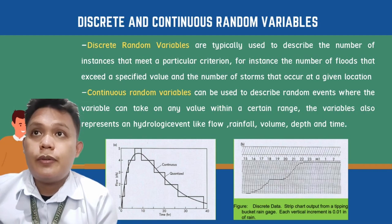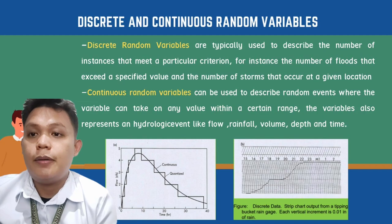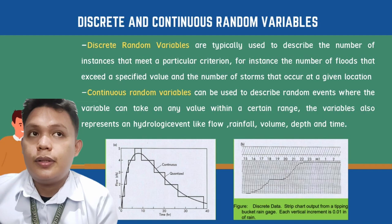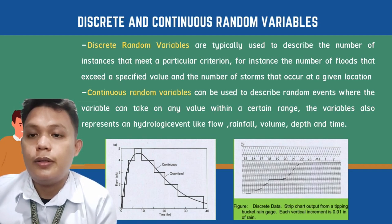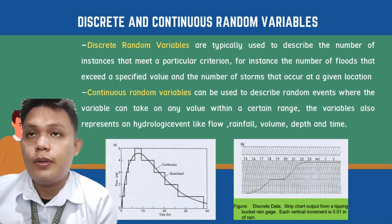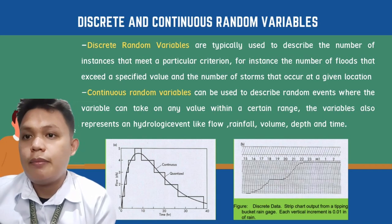The difference between discrete and continuous random variables: discrete variables count things in a collection, like how many students are in a classroom or how many planets are in the solar system. Continuous random variables are measurable quantities, such as volume in cubic meters, rainfall, flow in cubic meters per second, and time in seconds, minutes, or hours.